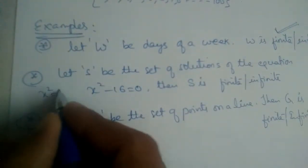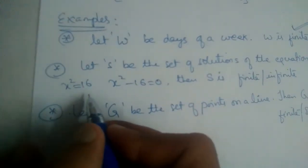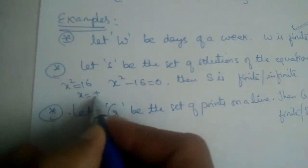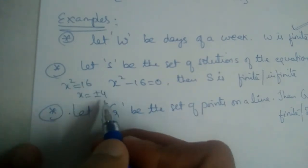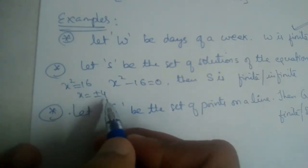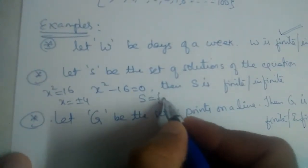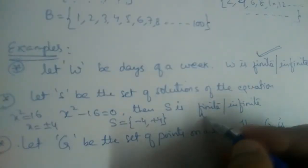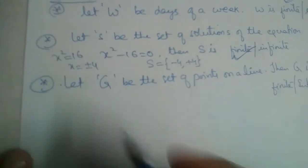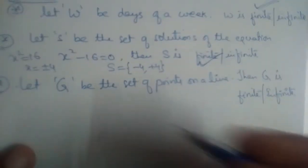Next, let S be the set of solutions of the equation x² − 16 = 0. Is S finite or infinite? We solve: x² = 16, so x = ±√16 = ±4. There are only two elements in S: minus 4 and plus 4. So S is a finite set.